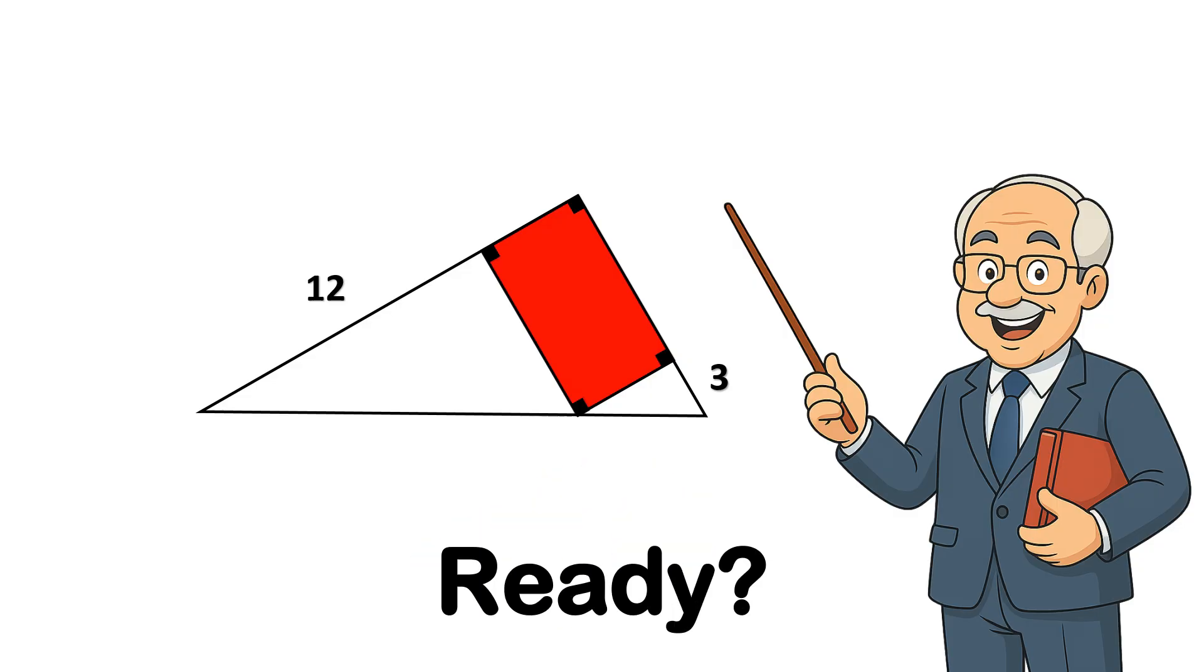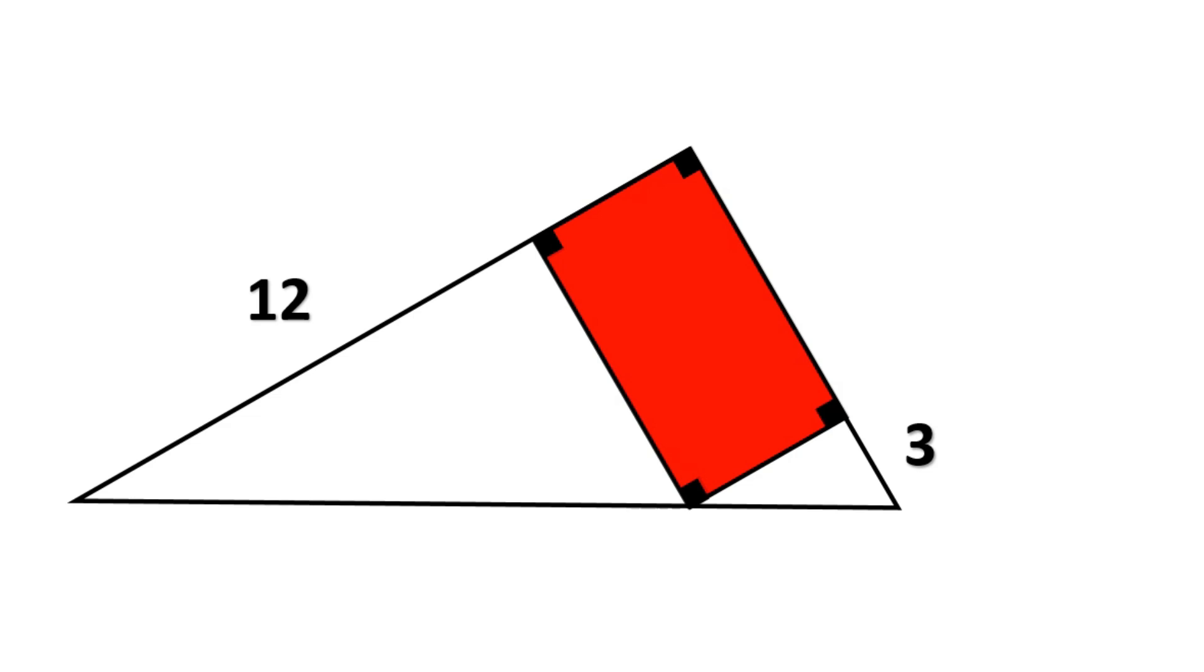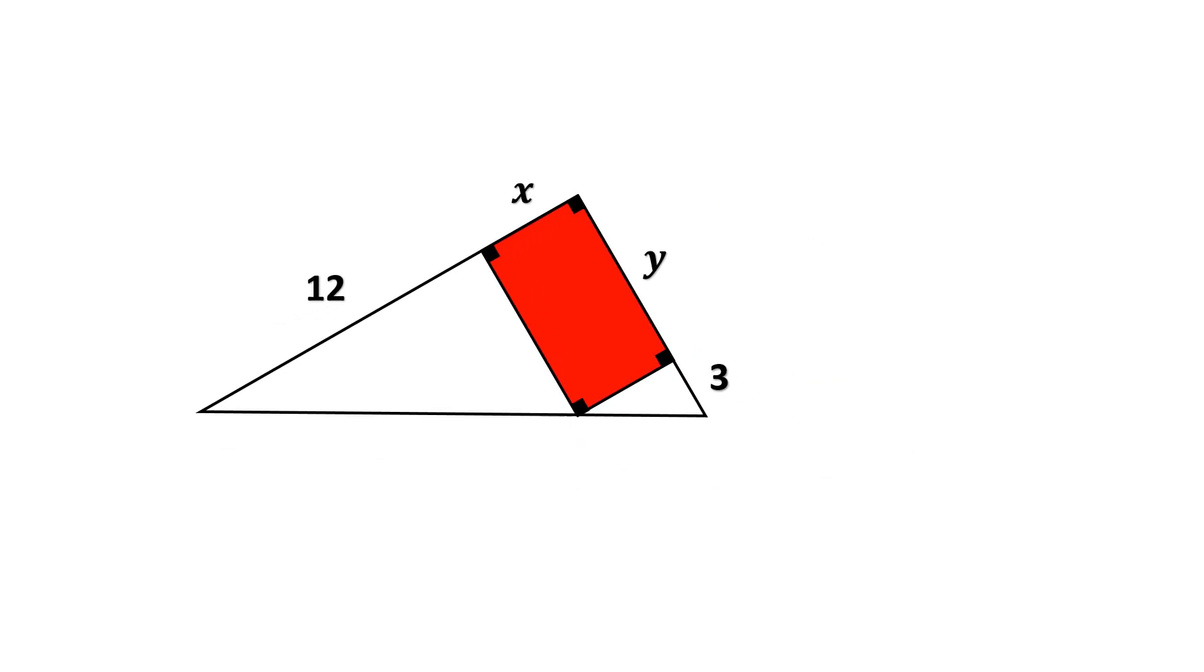Let's jump in. Here we have a right triangle with two segments of its sides, labeled 12 and 3. And inside this triangle, a red rectangle is trapped with no dimensions provided. Let's define width equals x and length equals y. And the area is xy. Simple enough.